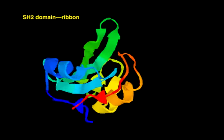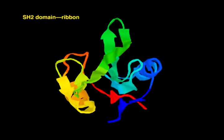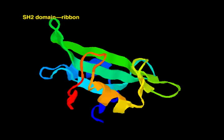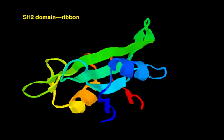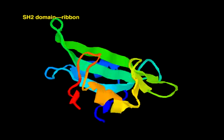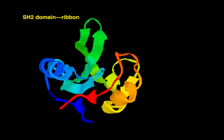The ribbons view accents alpha helices and beta sheets. These secondary structural elements determine the fold of most polypeptide chains. Beta strands are shown as arrows pointing from the N to the C terminus, and alpha helices are shown as twisted cylinders.